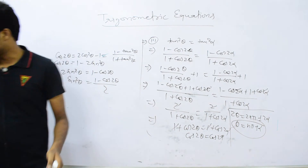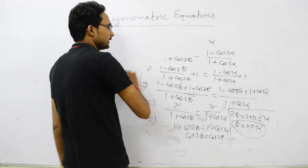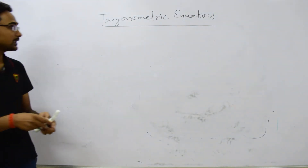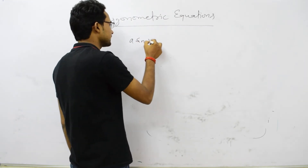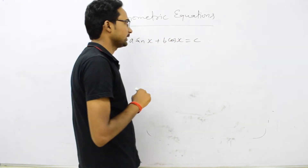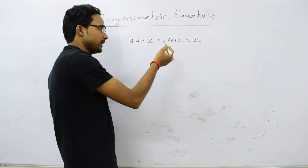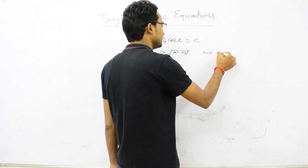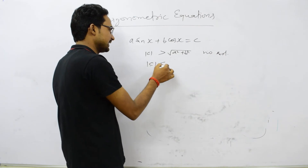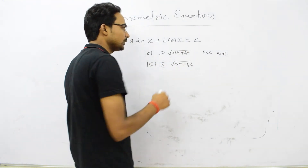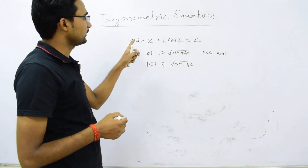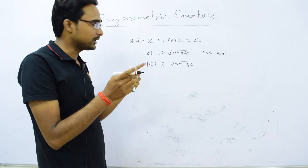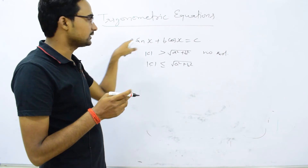One more case: if a trigonometric equation is given in the form A sin x + B cos x = c, how do we find the general solution? First check: if |c| > √(A² + B²), there is no solution. If |c| ≤ √(A² + B²), a solution exists. We take the coefficients of sin x and cos x, square them, find the root, and divide the equation by √(A² + B²).